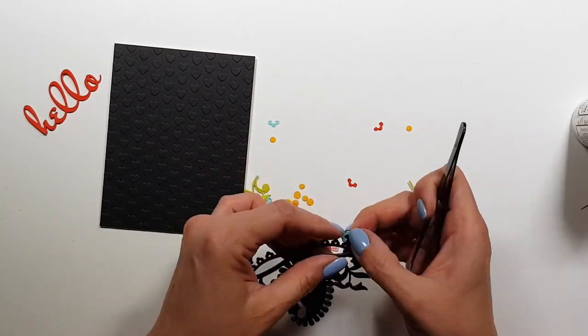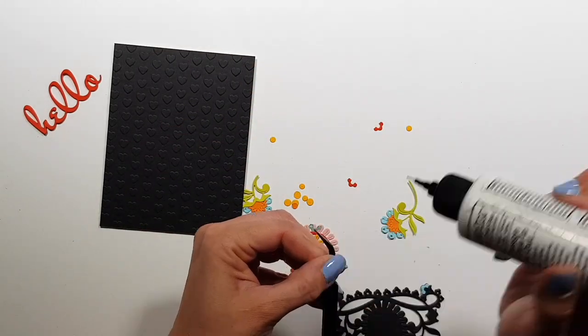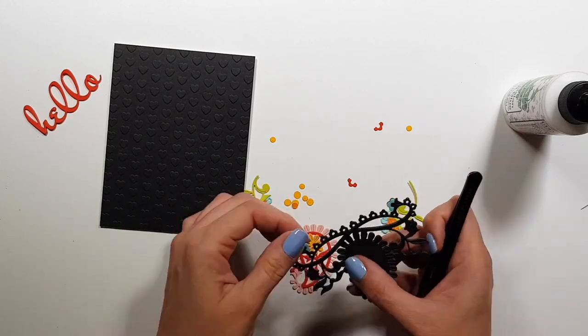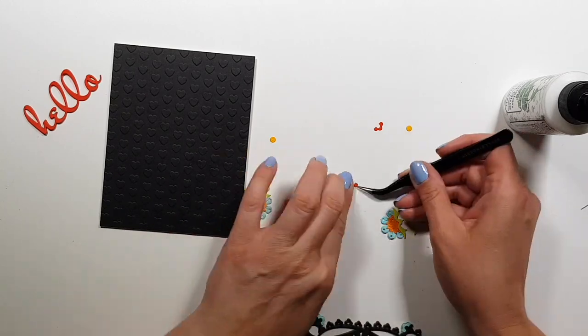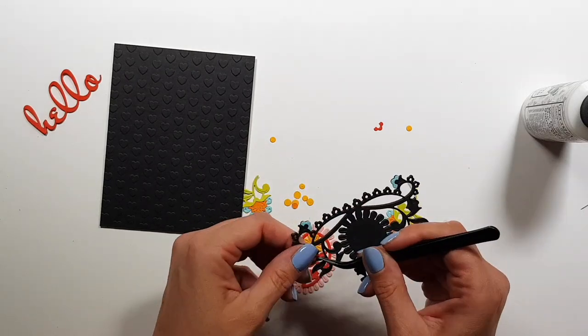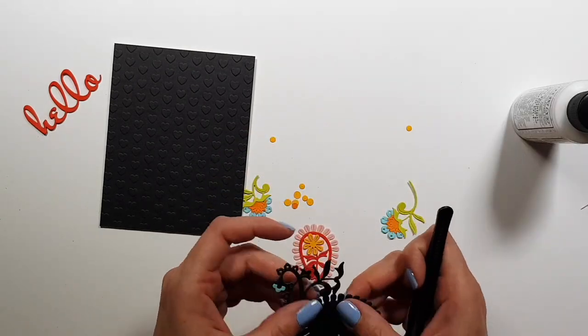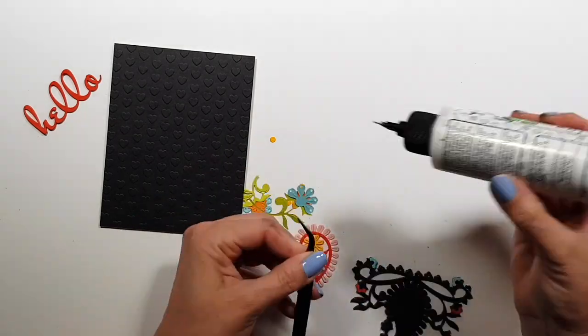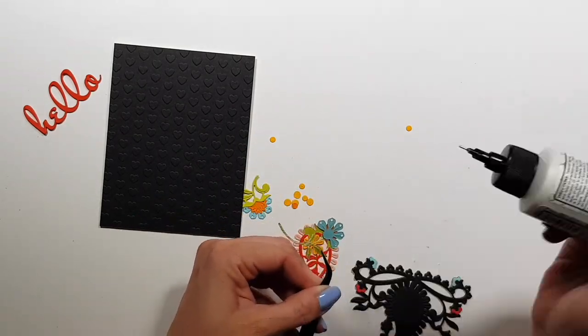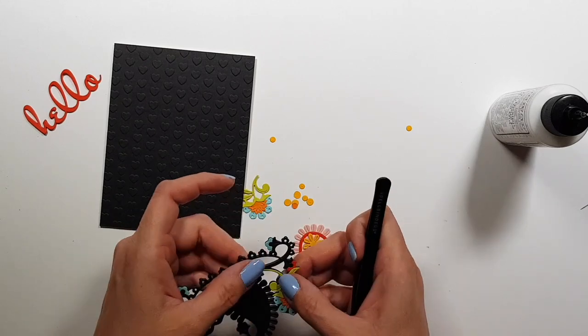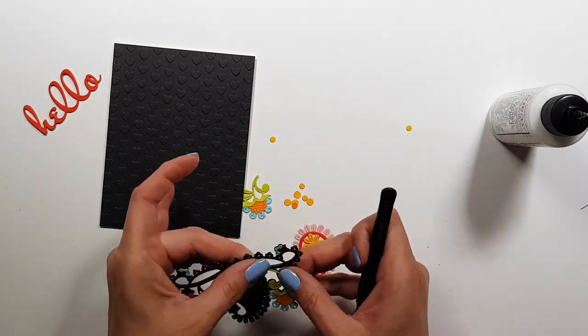So I basically use the same colors as last month on my black card. And I think most of these, if not all are spellbinders cardstock, actually all of them now, except for the super light pink, that's a textured basil cardstock, but everything else is spellbinders.